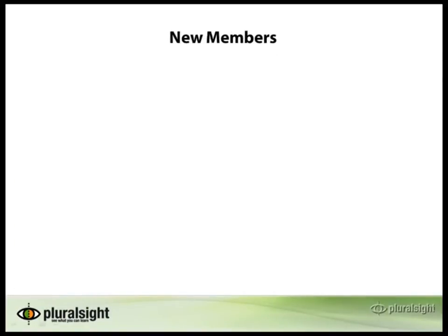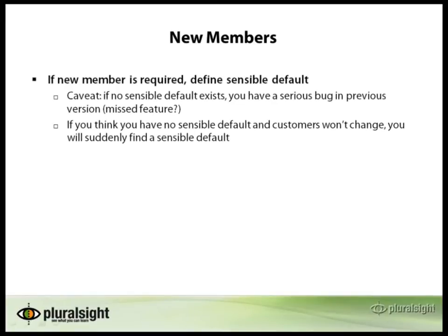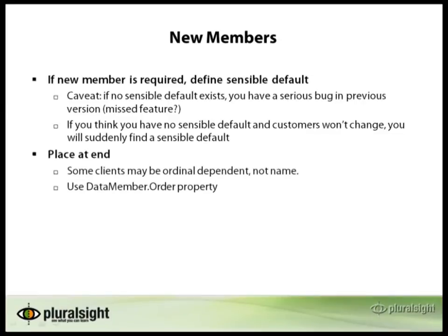Another reason to version a data object is because you add new members. If you have a new member that's required, make sure you're defining a sensible default. One caveat: if no sensible default exists, you have a serious bug in the previous version — did you miss a feature? What I've found in the past is that folks can suddenly find a sensible default that will make sense for a member that used to be required. For new members, make sure you place them at the end of your data object — even when you're creating a new version. This eases the upgrade burden by making it simpler for someone to add those new properties, making it very easy to find a place in code to make these updates.